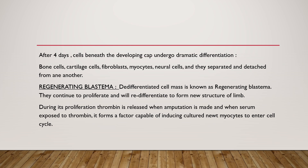The blastema cells continue to proliferate and will re-differentiate to form the new structure of the limb. During proliferation, thrombin is released. Thrombin helps in regeneration — when amputation is made and the serum is exposed to thrombin, it forms factors capable of inducing cultured newt myocytes to enter the cell cycle.